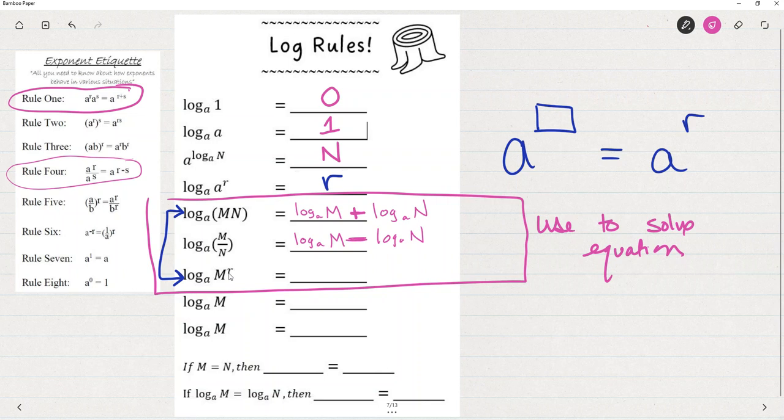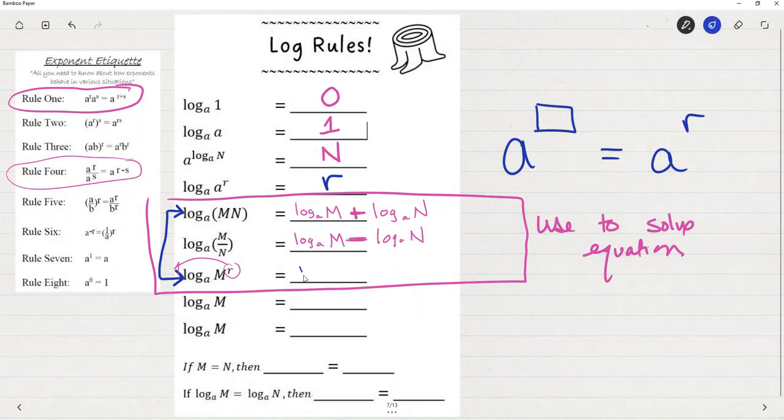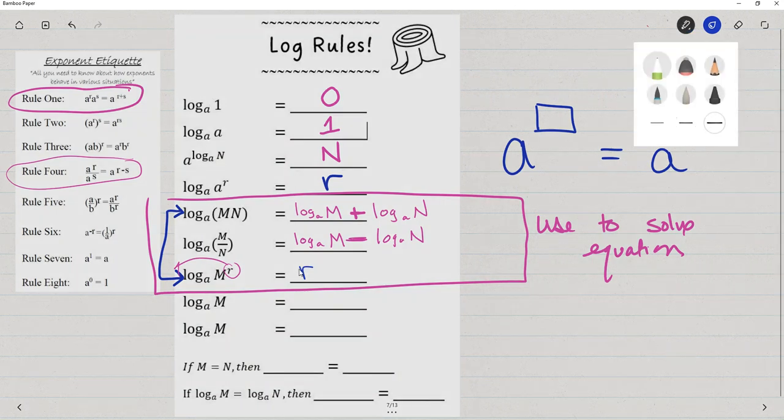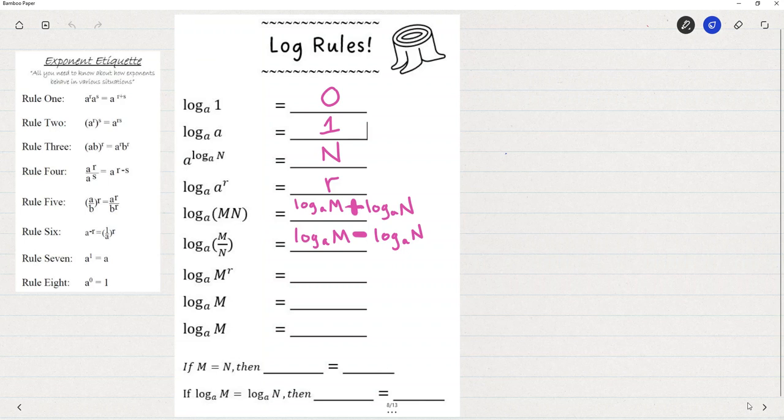Do you see this connection to rule four? So here's what you can bounce from if you know the exponent rules. Rule one and rule four, the like bases that are multiplied, we added the exponents. Like bases that were divided, we subtracted the exponents. So for a log base a of a product, we would likewise get the sum of the two logs. Log base a of a quotient, we would likewise get the difference of the two logs. And then this third one, here's what happens with power, is that this power, this exponent, is going to fall down in front of the log.